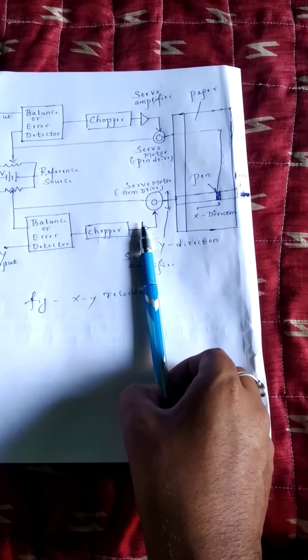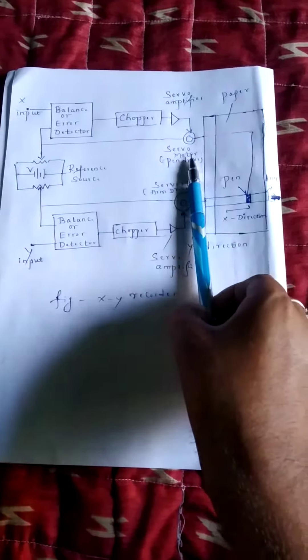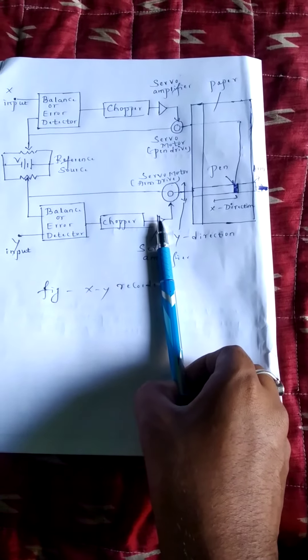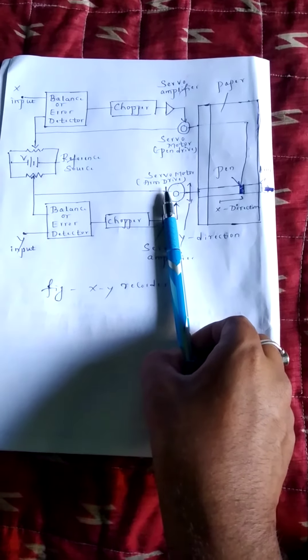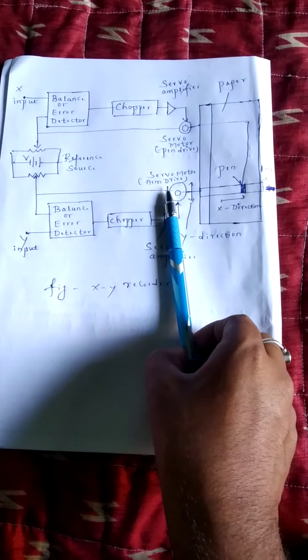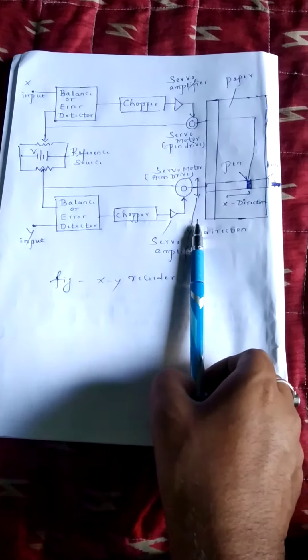This amplified AC error signal is then applied to actuate servo motor so that pen and arm mechanism moves in appropriate direction, means y and x directions.